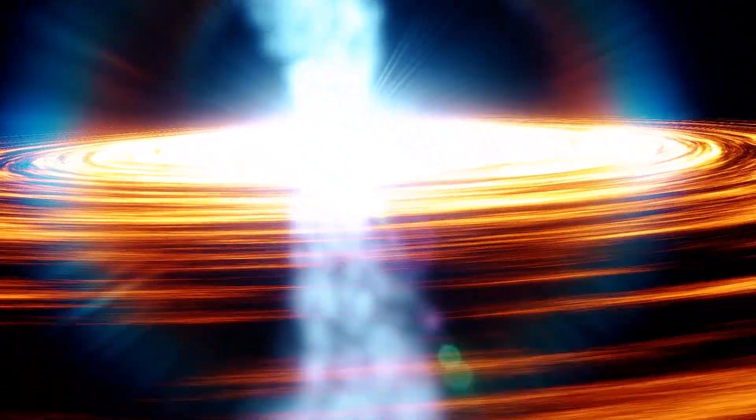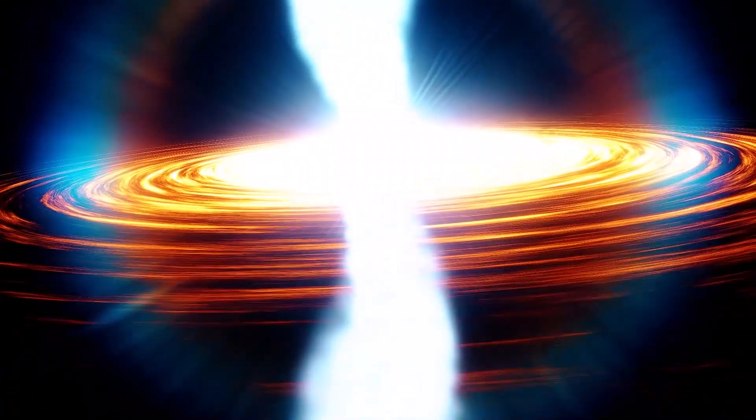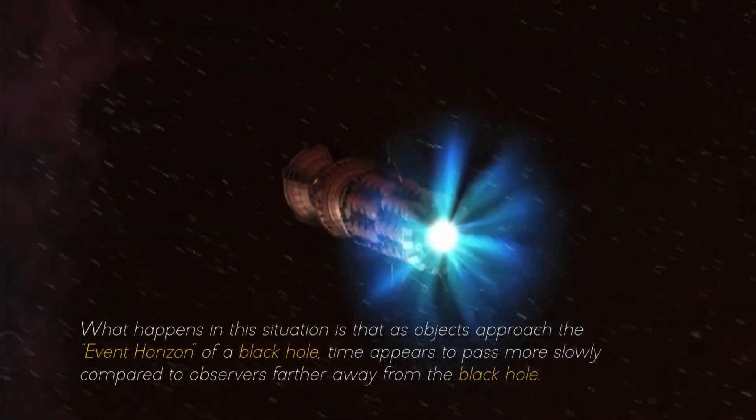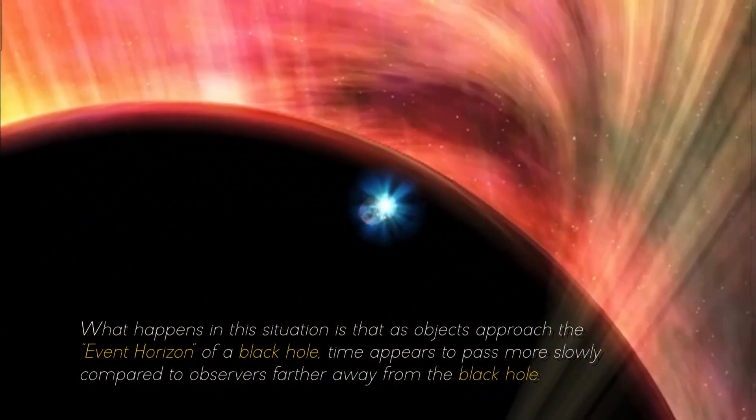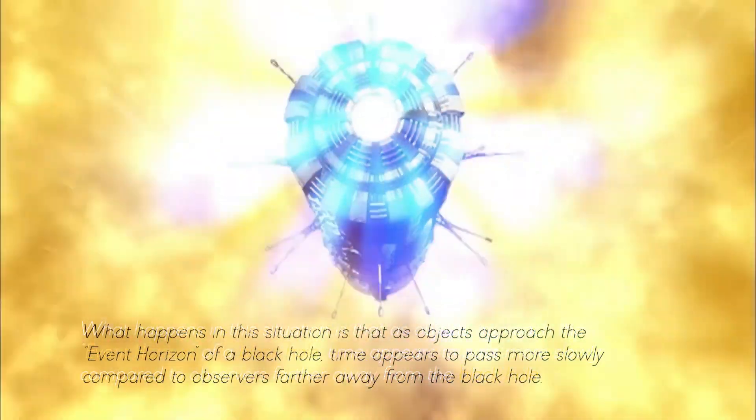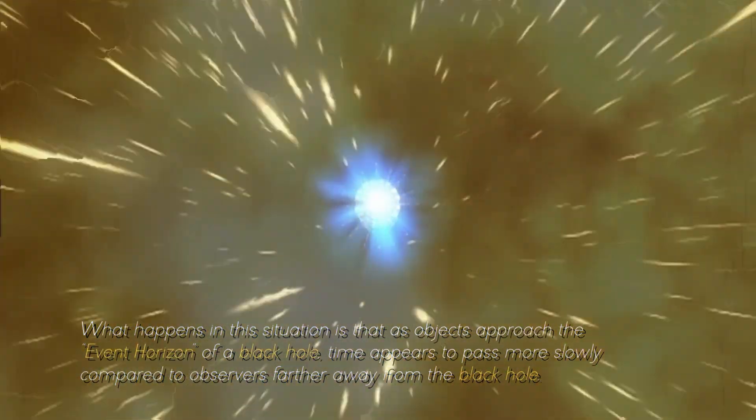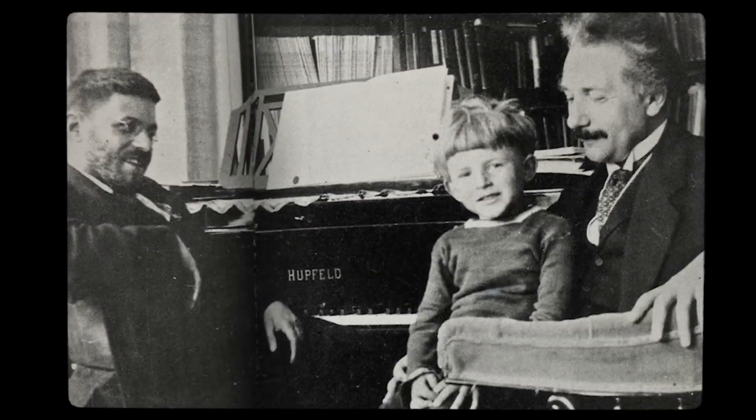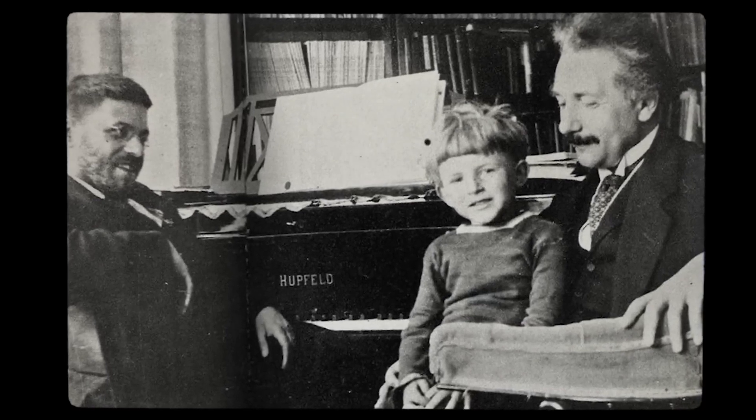But most surprising of all, the extreme gravitational attraction near a black hole gives rise to a phenomenon known as time dilation. What happens in this situation is that as objects approach the event horizon of a black hole, time appears to pass more slowly compared to observers farther away from the black hole. This phenomenon, predicted by Einstein's theory of relativity, is due to the warping of space-time caused by the intense mass of the black hole.